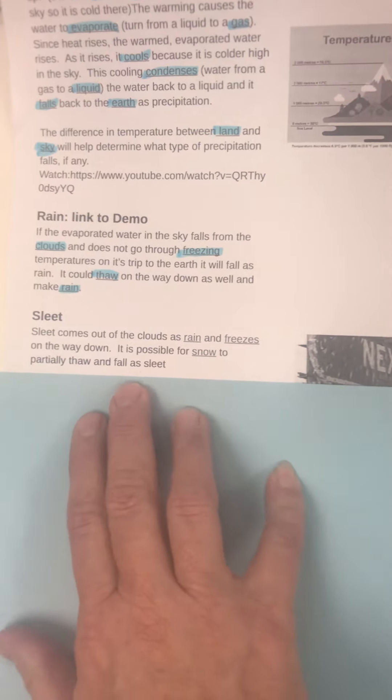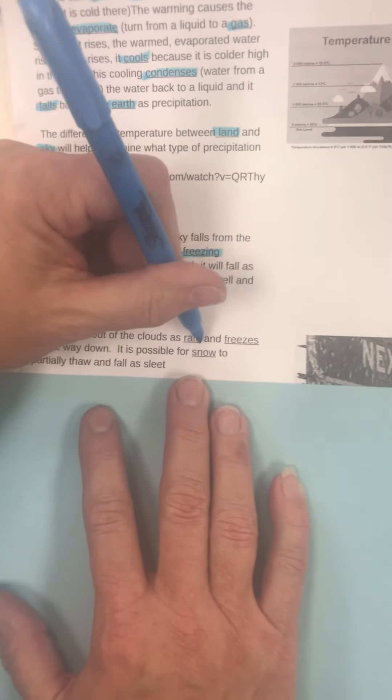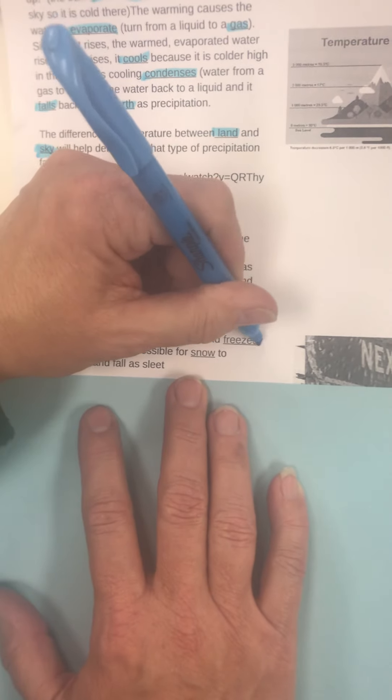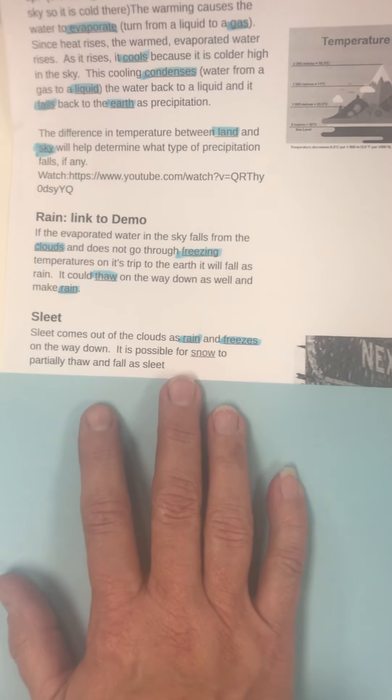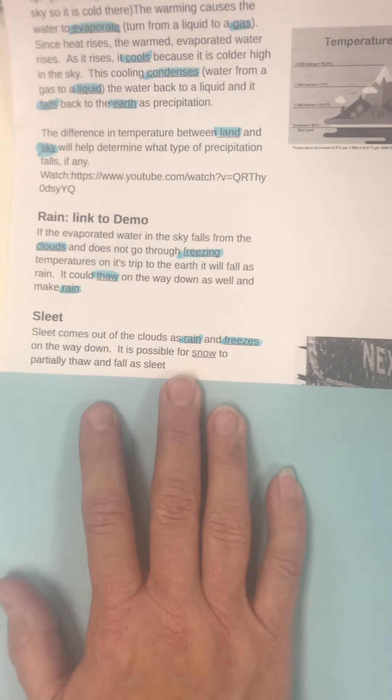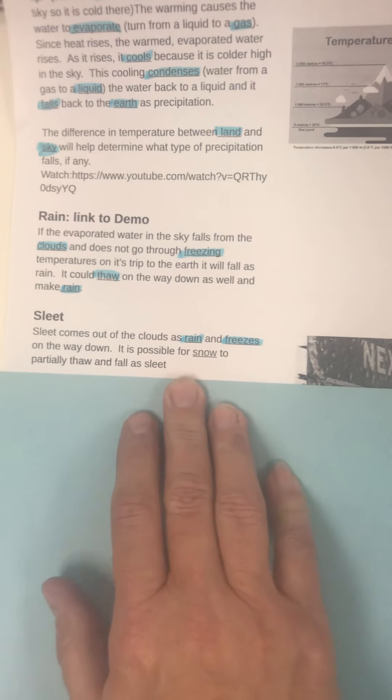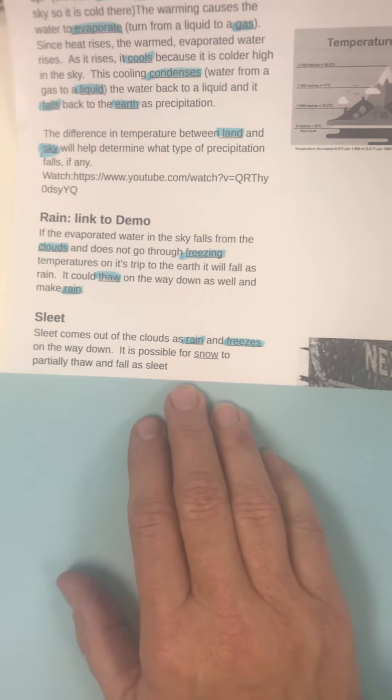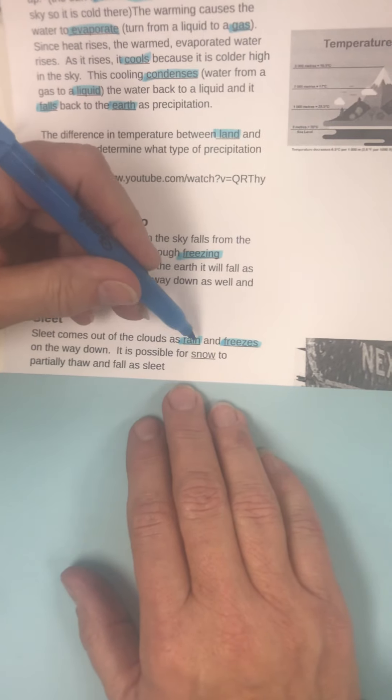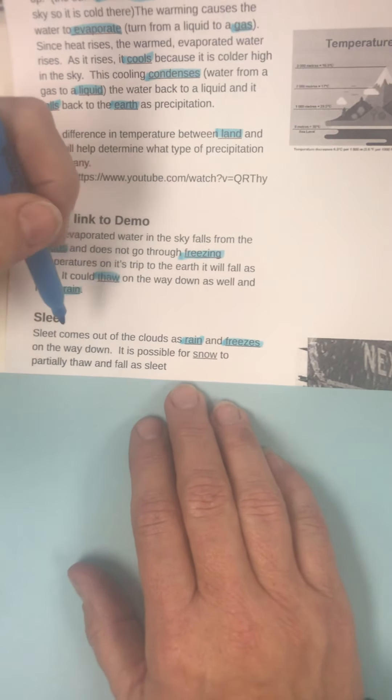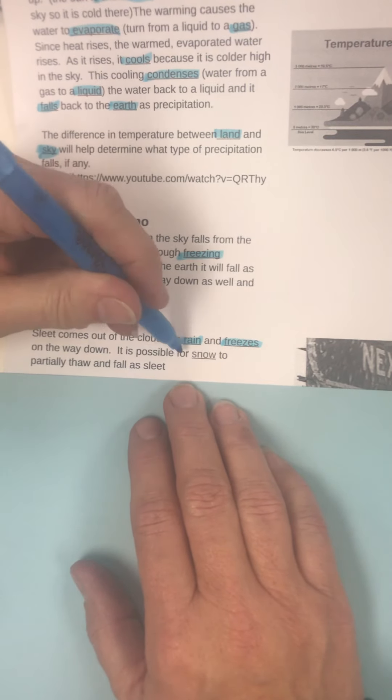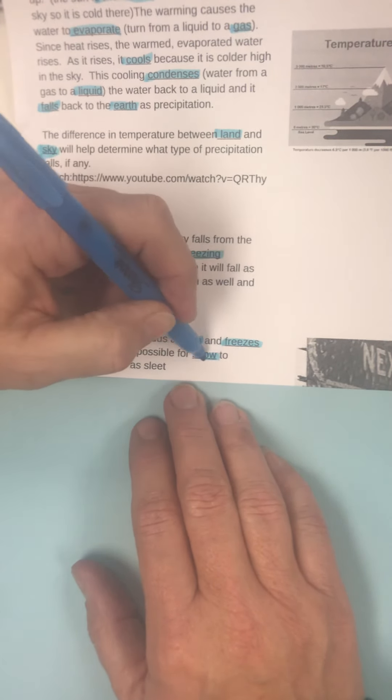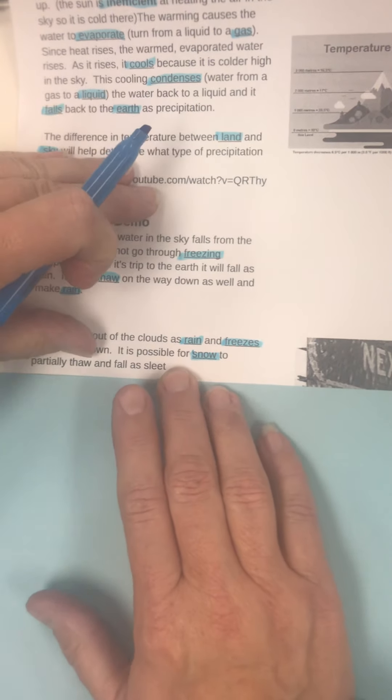Sleet. Sleet comes out of the clouds as rain and freezes on the way down. If it froze in the clouds, it would be going directly from a gas to a liquid, and it would be a snowflake if it did that. But since it's not frozen in there and it freezes on its way down, it makes a little clump. Sleet comes out of the clouds as rain and freezes on the way down. It is possible for snow to partially thaw and fall as sleet.